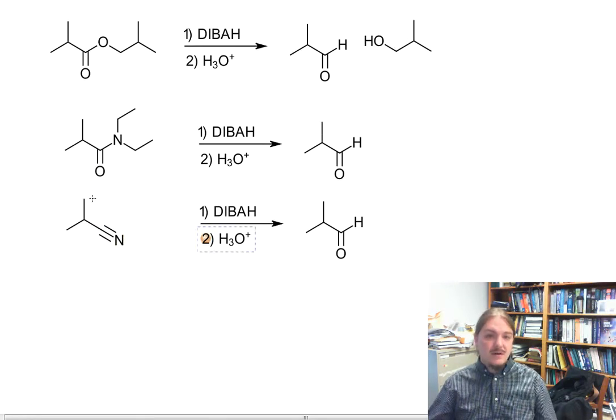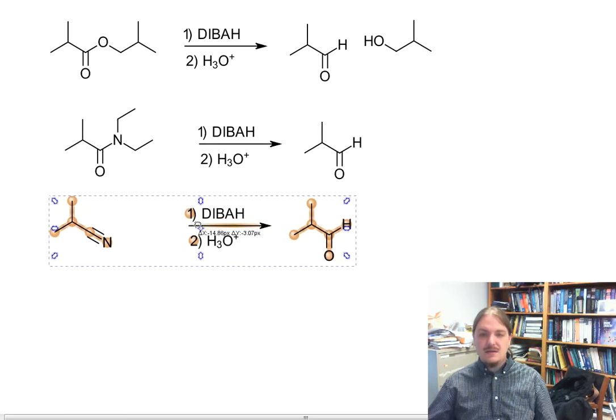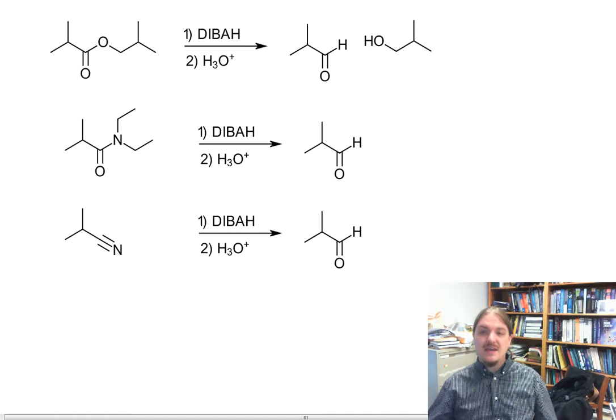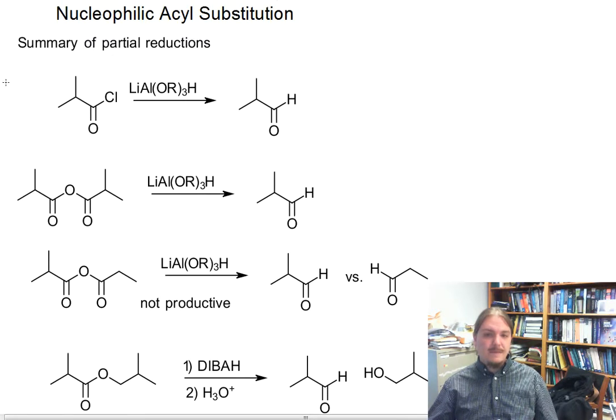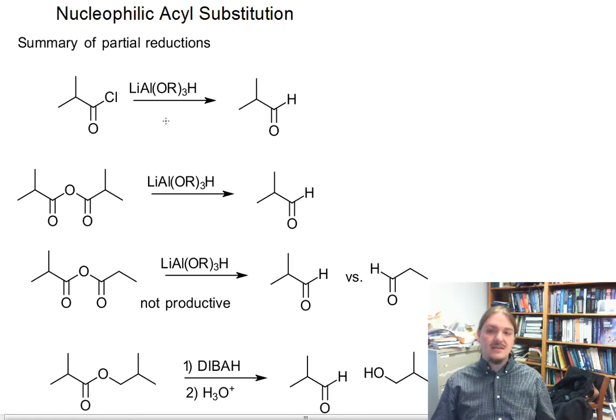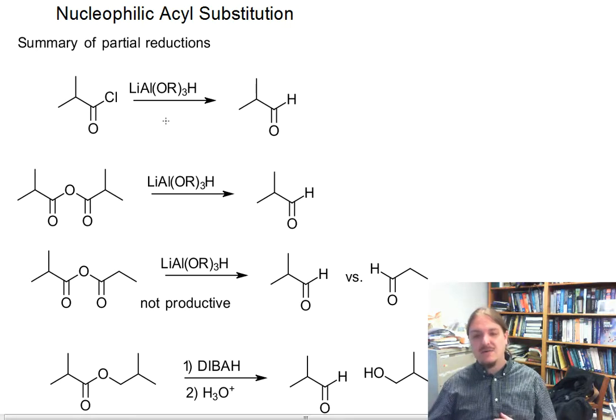Here is a summary of the partial reductions of the carboxylic acid derivatives. Lithium aluminum trialkoxyhydrides reduce acid chlorides and anhydrides to aldehydes. It is a weaker reducing agent, therefore it's more selective. It reacts with the more reactive carboxylic acid derivatives but does not react with aldehydes.